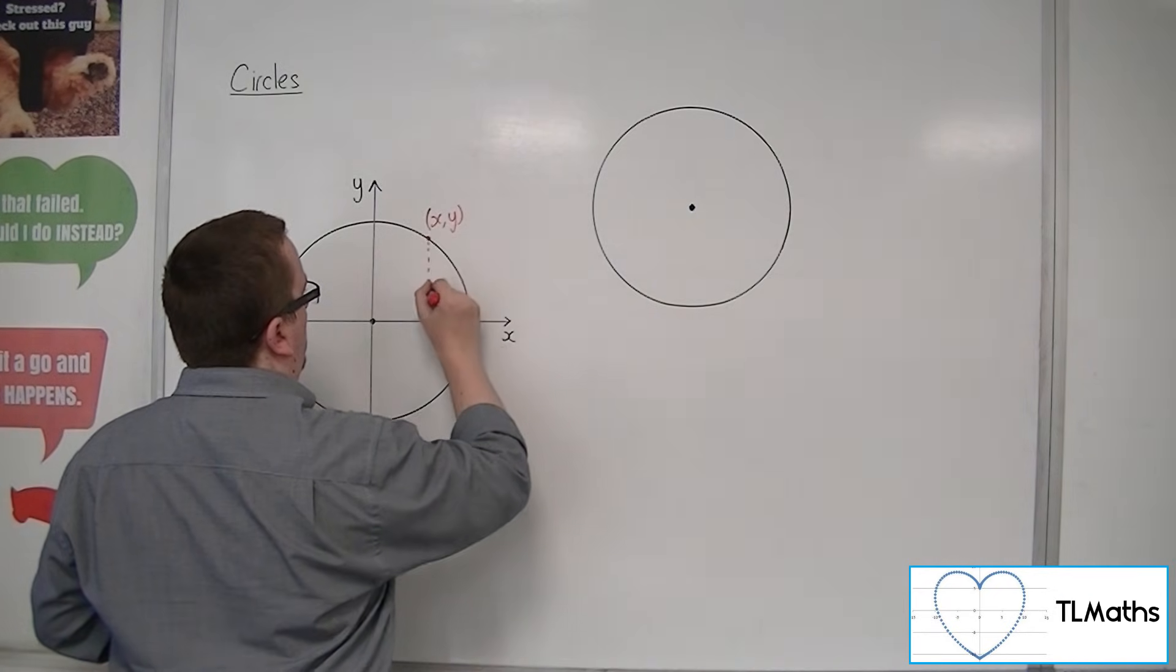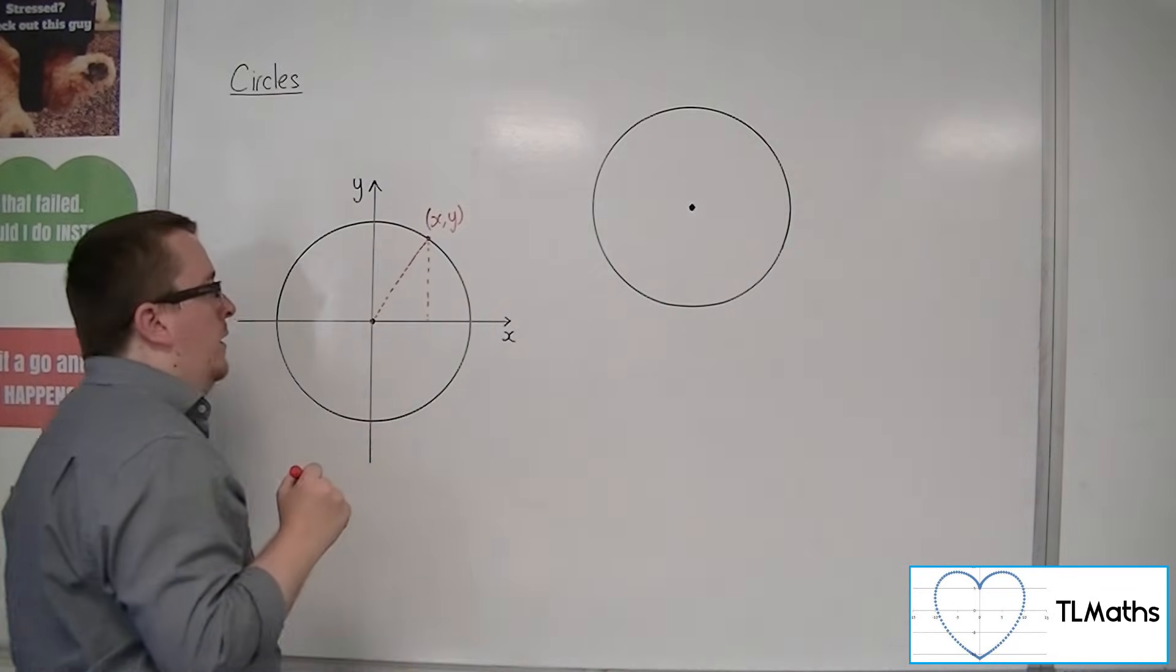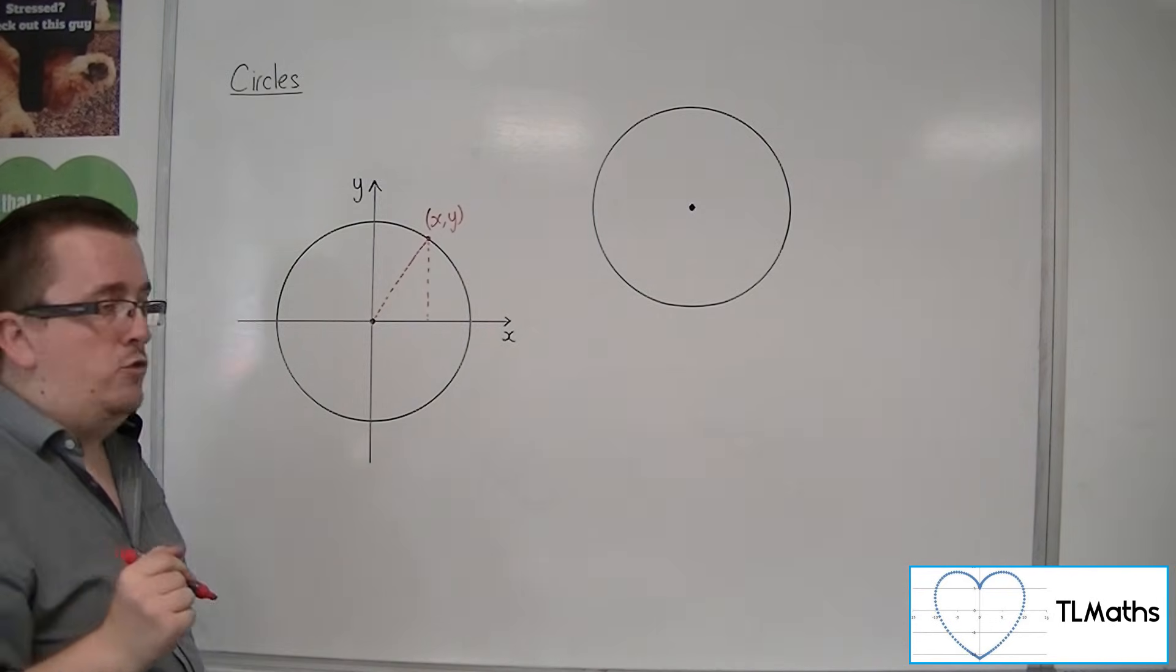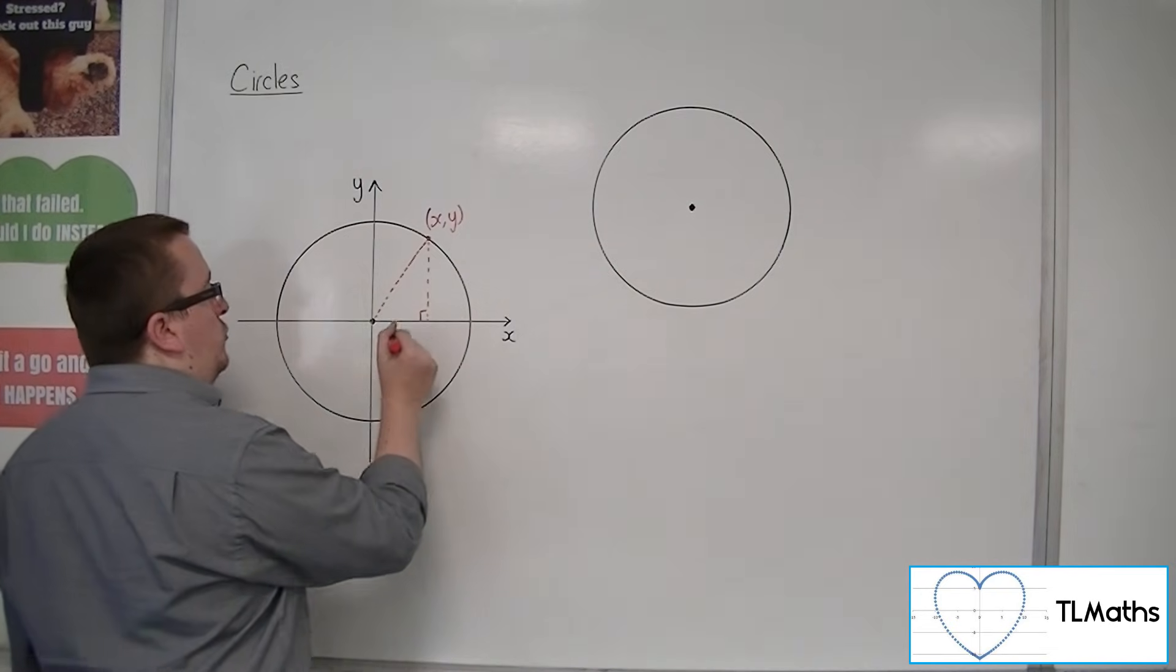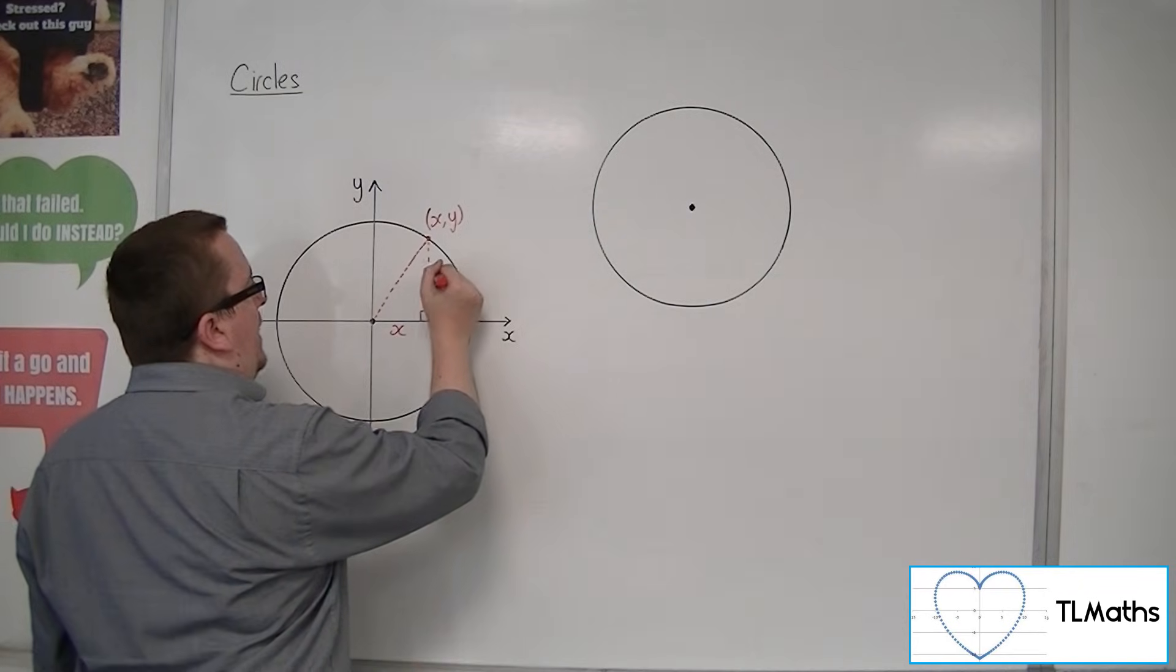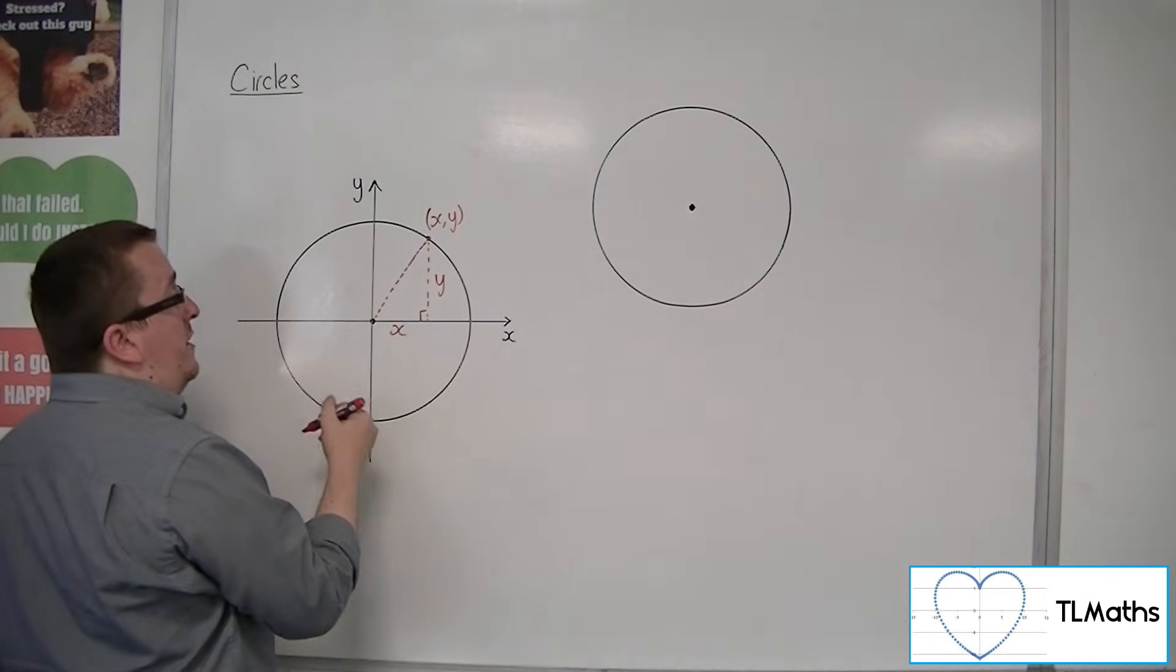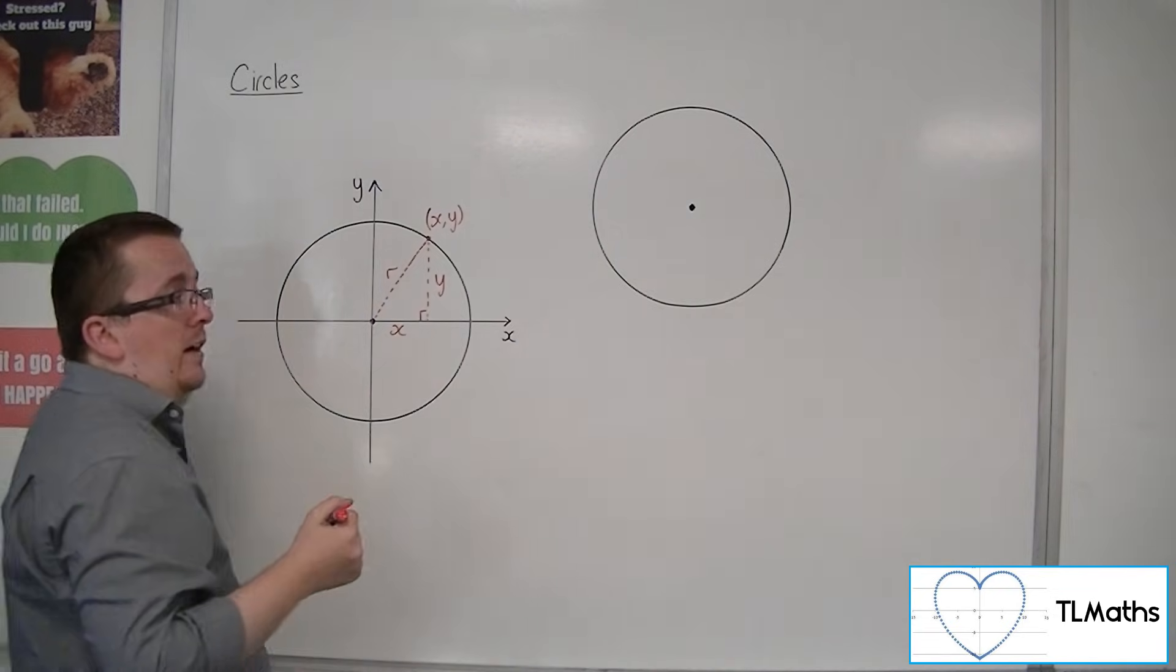So if I draw a right-angled triangle from that point to the center of the circle, then this is a triangle that has a base length of x and a height of y. And I know that I can refer to this length as r, the radius.